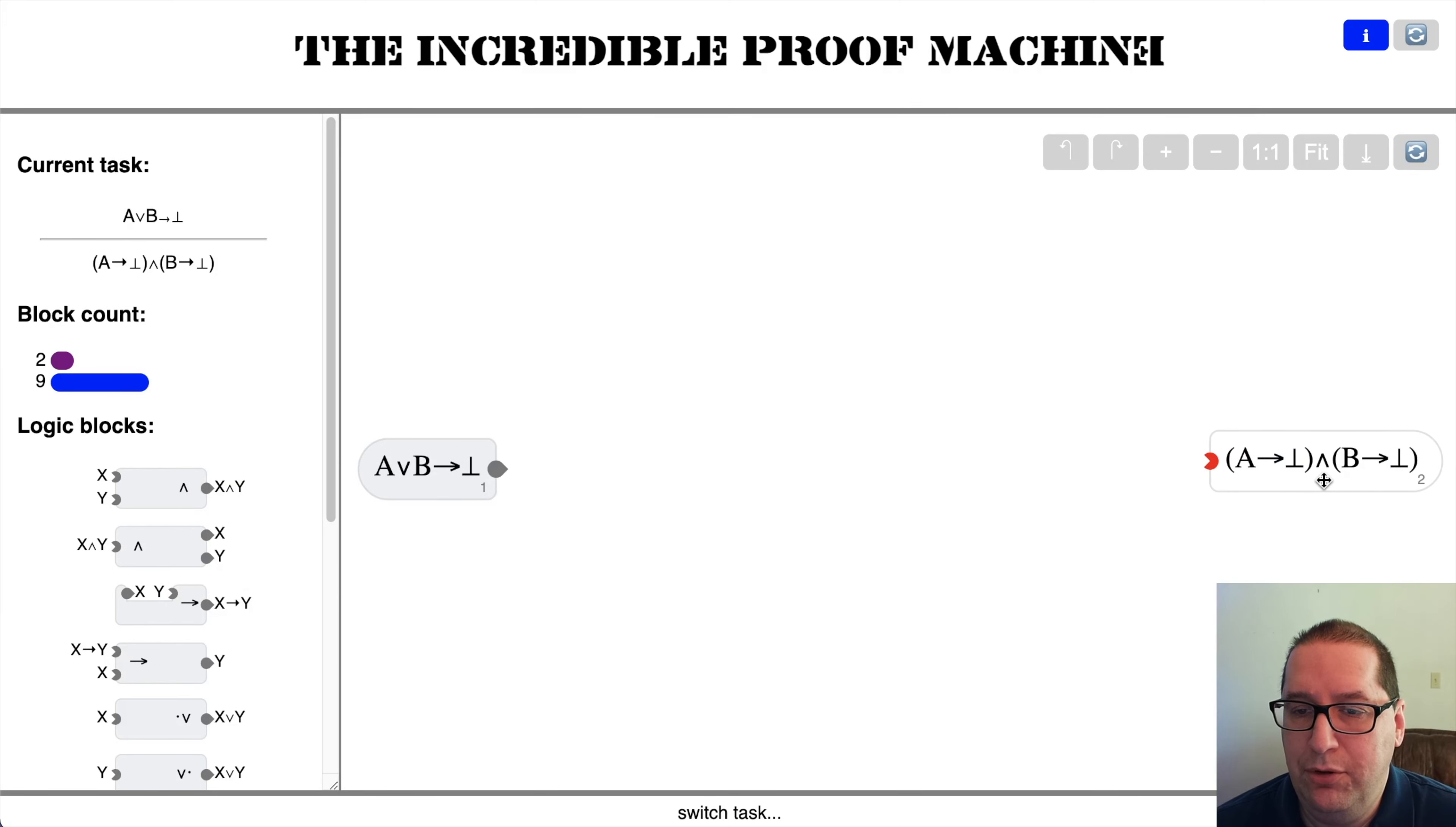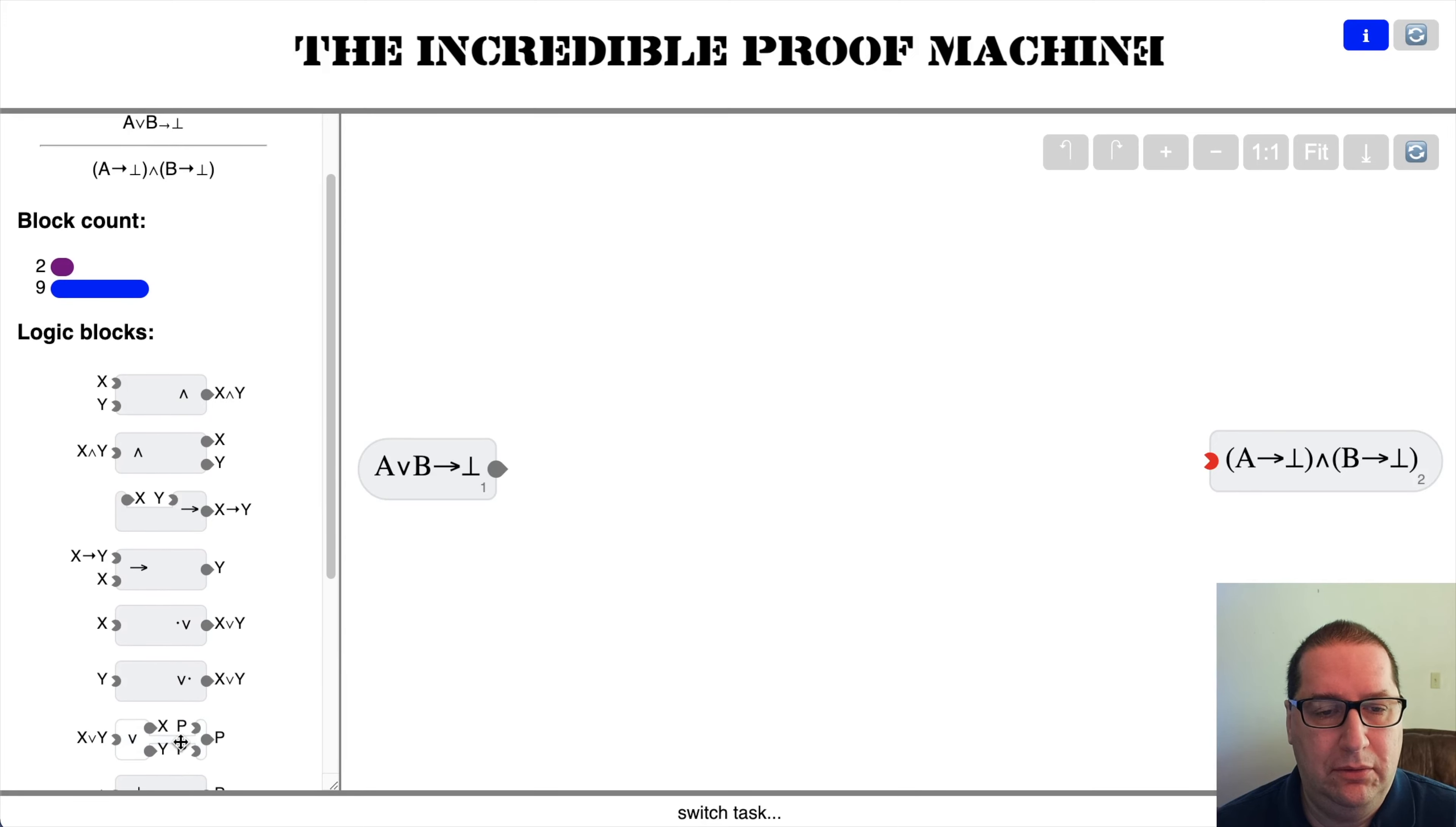A or B implies absurd. And we need to prove A implies absurd and B implies absurd. We've got this implication here and I think we have to break it off. That would give us our absurd value. But I don't have an A or B to feed into this. So there's going to have to be an assumption. And in fact, we're going to have to have an A implies absurd and a B implies absurd. No matter what, we're going to have to create that implication. So let's grab it.